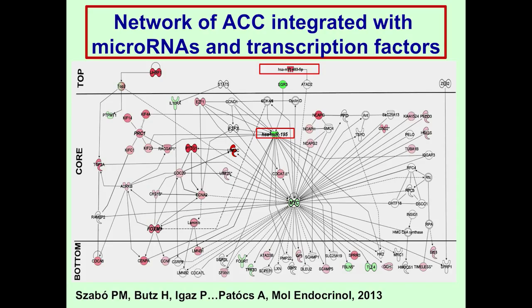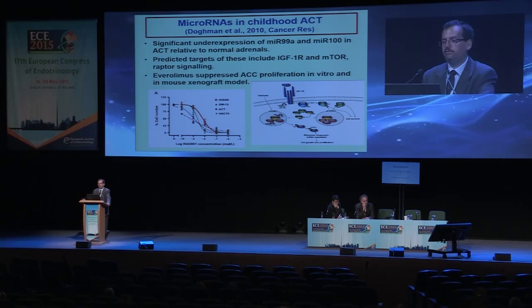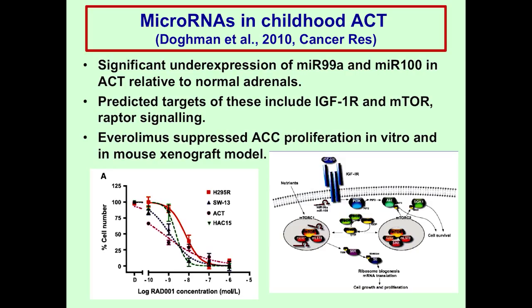I must also mention the study by Mabruka Dogman and Enzo Lally on microRNA expression in childhood adrenal tumors, where underexpression of miR-99a and miR-100 were noted. These target the IGF-2 receptor, IGF-1 receptor, and mTOR signaling. mTOR has a very efficient drug — Everolimus — and in vitro and xenograft studies showed it suppressed ACC proliferation, suggesting a promising medication. However, in the clinical setting, Everolimus doesn't seem to be that effective in adrenocortical cancer, showing that in vitro and xenograft models do not always parallel the human clinical setting.